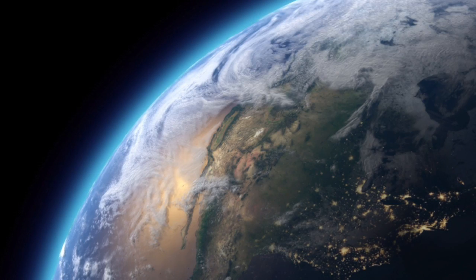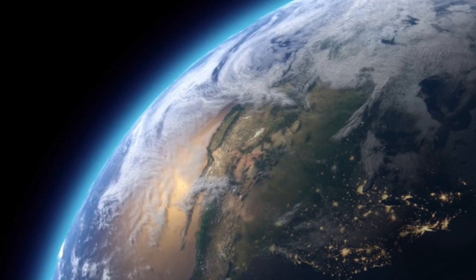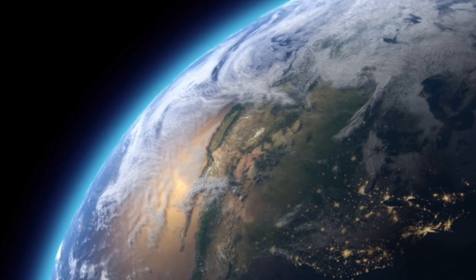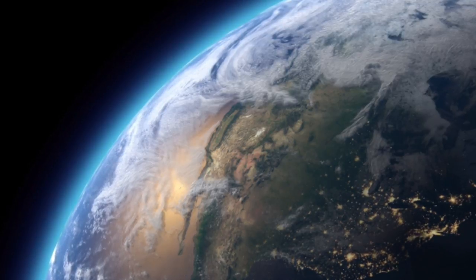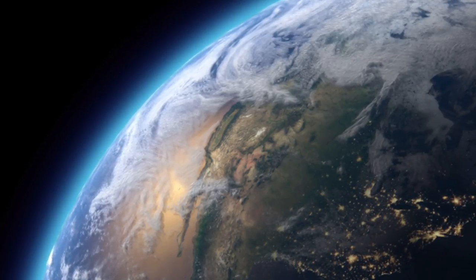This is Earth. Earth is one of eight planets in our solar system. Earth is the third closest planet to the sun. Earth is home to over seven billion people.